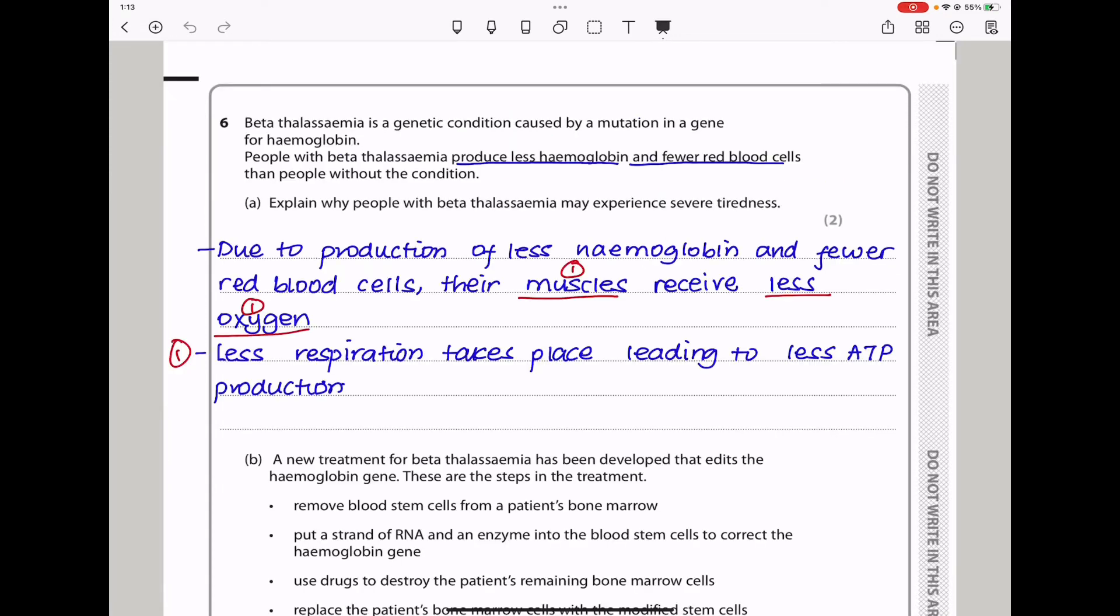Let's continue to question 6. Beta thalassemia is a genetic condition caused by a mutation in a gene for hemoglobin. People with beta thalassemia produce less hemoglobin and fewer red blood cells than people without the condition. Explain why people with beta thalassemia may experience severe tiredness. Hemoglobin is contained in the red blood cells and this is used in the transport of oxygen around the body to the muscles. I said, due to production of less hemoglobin and fewer red blood cells, their muscles receive less oxygen, so there will be less respiration taking place, leading to less ATP.